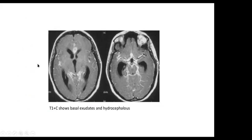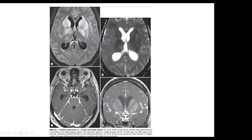Another case of tuberculous meningitis: T1 contrast axial sections show basal cistern enhancement and development of hydrocephalus. In another TB meningitis case, FLAIR shows bilateral hyperintense signals of the basal cisterns, which are restricted on ADC map, consistent with ischemia secondary to arteritis. T1 contrast — both axial and coronal — shows diffuse leptomeningeal enhancement.